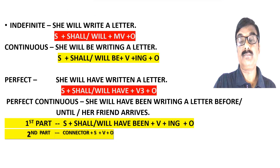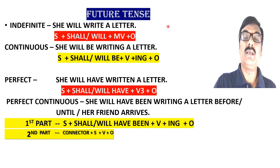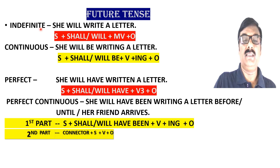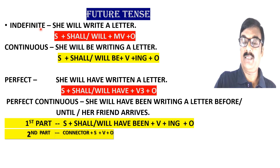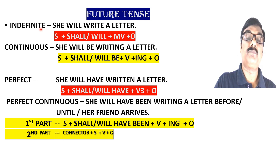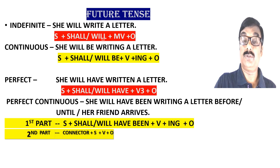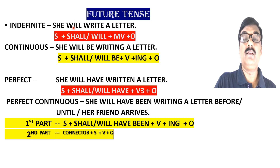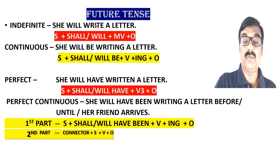Next is future tense. Future indefinite tense is used when any action will take place in the future — the time that has not yet come — in a normal, general way. The structure is: Subject + shall/will + main verb (first form) + object. Example: 'She will write a letter.' Here 'she' is subject, 'will' is the modal/helping verb, 'write' is the first form of the main verb, and 'a letter' is the object.